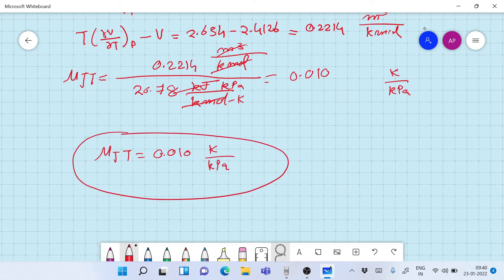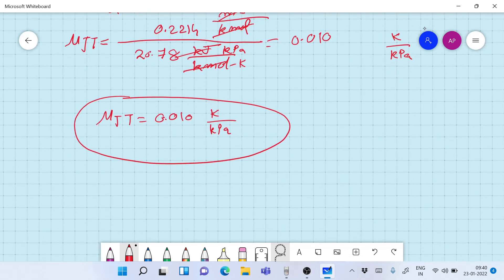Now as we can see here, the mu JT has a positive value. So what does this mean? If it has a positive value, this means that if the temperature is T2 minus T1 and the pressure is P2 minus P1, and if this is positive, the LHS is the definition of mu JT. If there is a reduction in pressure, there is a reduction in temperature too. So we are getting throttling here. It will cause cooling. If we throttle, it will cause cooling, and that is the meaning of having a positive mu JT.